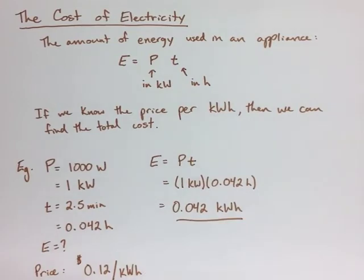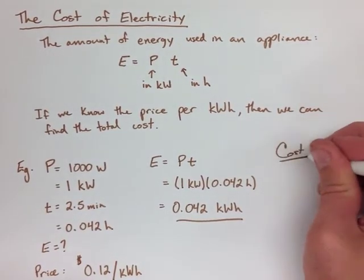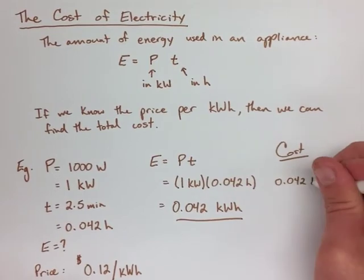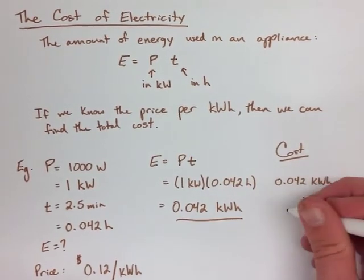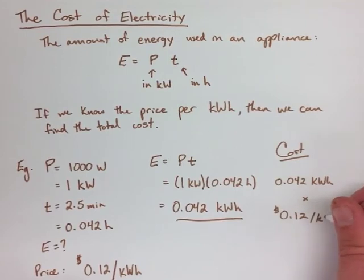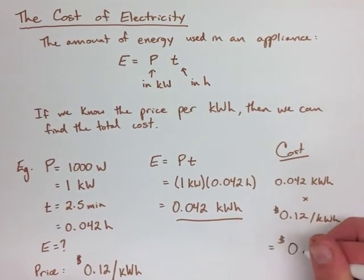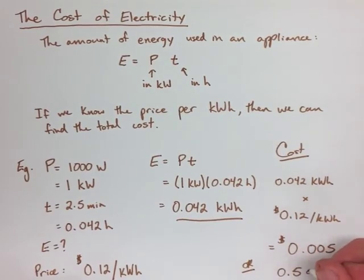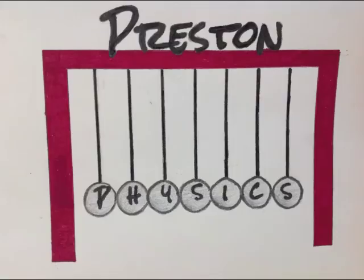So, we can just multiply this by how many kilowatt hours we have to find our cost. After we do the multiplication, we end up with 0.005 dollars or 0.5 cents to run this appliance for 2.5 minutes. The questions associated with this note are 14 and 15 from your yellow duotangs.